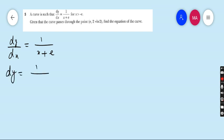dy is equals to 1 upon x plus e dx. Integrate both sides. What is the derivative of x plus e? Derivative of x is 1. Derivative of e is 0 because e is constant and the derivative of x is 1 is present in numerator. Therefore, the integration must be ln x plus e plus c.